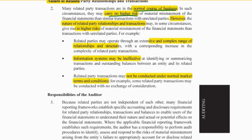However, there are some relationships and transactions that give rise to higher risks. That is where there is a complex relationship or complex structure within the group, which could make the transactions between the two parties very complex. The information systems may be ineffective, which could result in misstatements in the balances and transactions, because the information system is about how they go about recording those balances. Or transactions may not be under normal market terms and conditions — that is, they are not at arm's length.